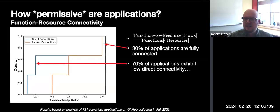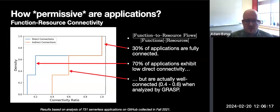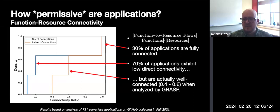And in fact, this is the conclusion that one might draw from using prior solutions like Zelkova or Amazon's IAM policy analyzer. However, when we use GRASP, we can see that applications are still highly connected. This is because GRASP considers the implications of indirect connections between application components.